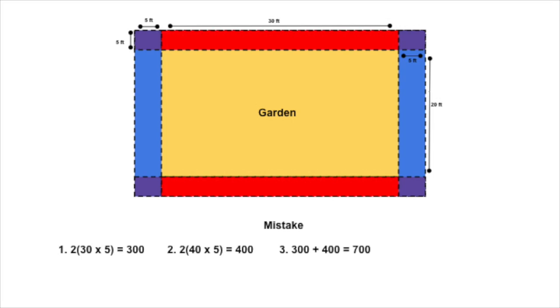700 square feet is the wrong answer. You might already realize why, but let me explain. We first did two of the sides — shown here in red. But then we did the other sides, shown in blue. Uh-oh. See what happened? Those purple corners? Those areas were counted twice, and that's the danger in this method, and that's why this answer is wrong.